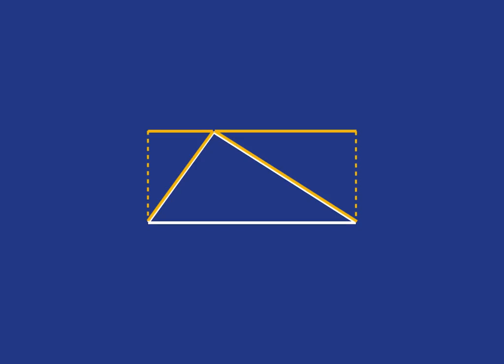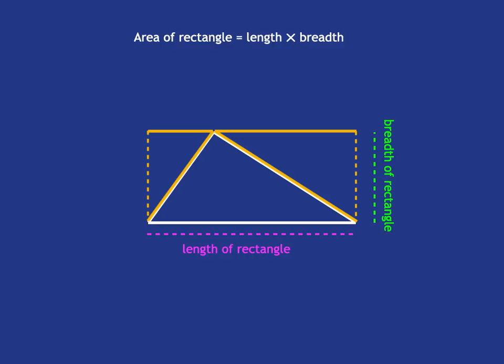So we know how to get the area of a rectangle. We need the length of the rectangle and the breadth of the rectangle, and our area of that rectangle then will be just length multiplied by breadth.